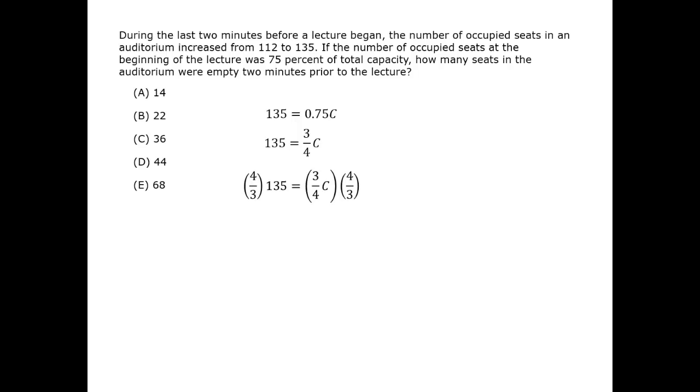In this fashion, we get 1 on the right side as the fractions cancel, and we learn that C equals 4/3 of 135. We can multiply that out, and we obtain that the capacity is 180.